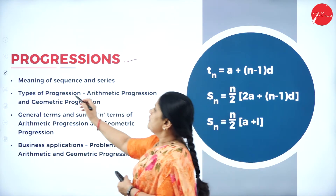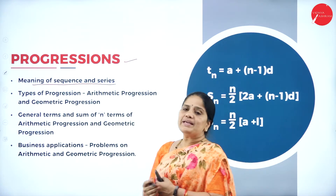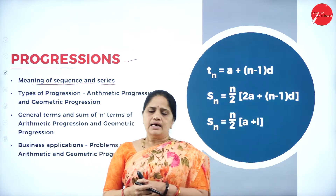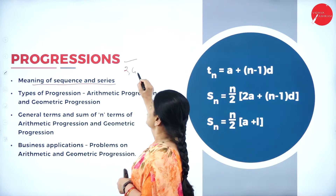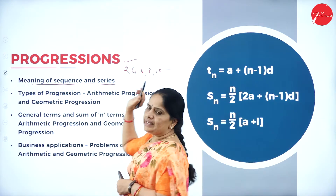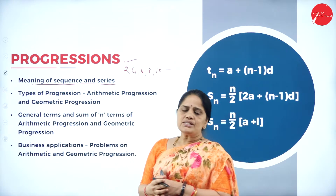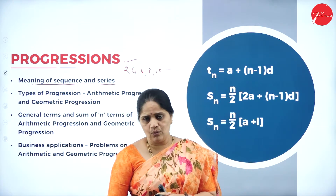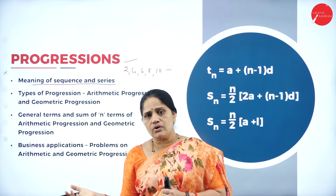In progressions, we will be studying about the meaning of sequence and series. Suppose I write 2, 4, 6, 8, 10 — what does it mean? It is a sequence of even numbers. Or if I write 1, 3, 5, 7, 9, it is a series of odd numbers.